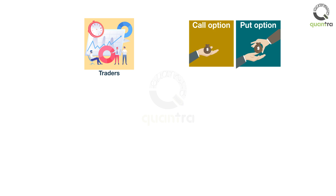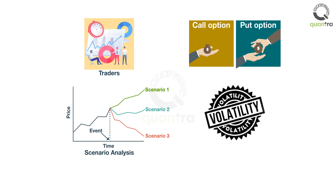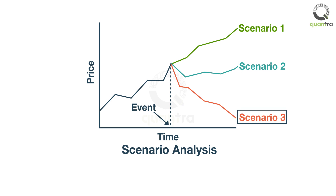Many traders use options to trade the volatility in the financial markets. In times of uncertainty like Brexit, U.S. elections, or the COVID pandemic breakout, the volatility is higher than usual. Scenario analysis is important to hedge your portfolio against the unknown unknowns. The possible outcomes of major events which can affect the financial markets are studied quantitatively. Based on the probability of each outcome to be true, different scenarios are devised. This analysis is then used to construct the portfolio or manage the risk of existing positions.